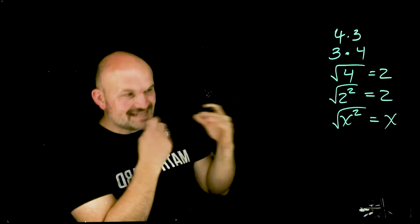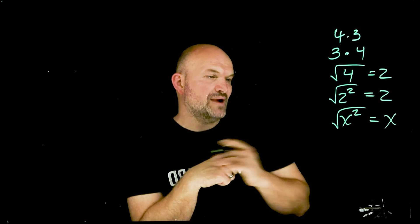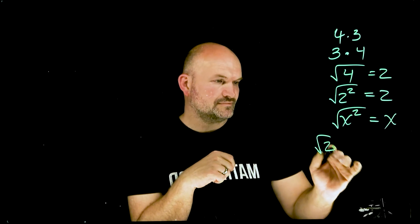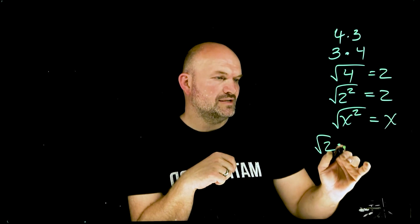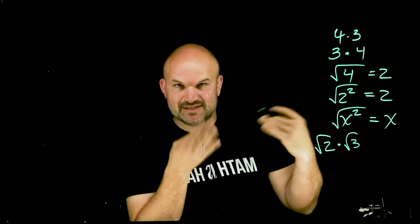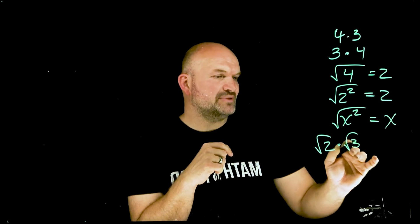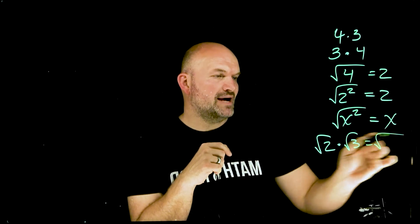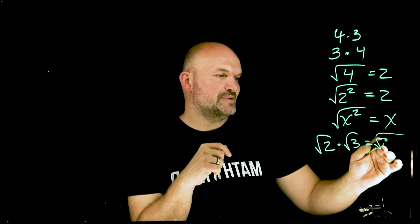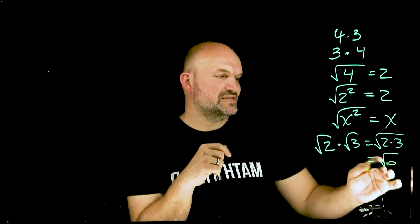The last thing I want to remind you of is the product rule of radicals. If I have the square root of 2 times the square root of 3, as long as the index — meaning the root type — is the same, to multiply these we simply multiply our radicand times our radicand. So in this case, it's going to be √(2×3), which equals √6.